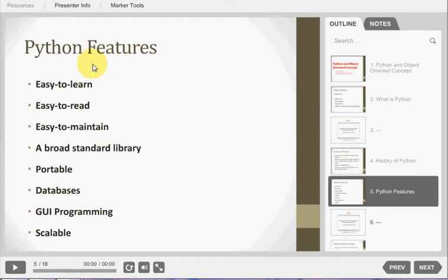Features of Python. There are a number of features that deal with Python. That is, easy to learn. Easy to learn means Python has very few keywords, that is reserved words, simple in structure and clearly defined syntax. This allows the student to pick up the language quickly. Easy to read. Python code is more clearly defined and visible to the eyes.